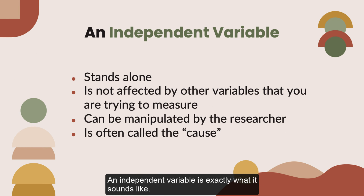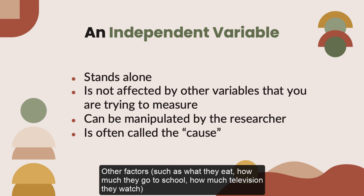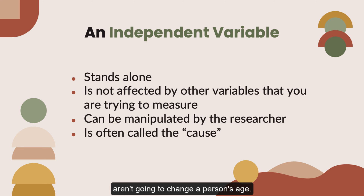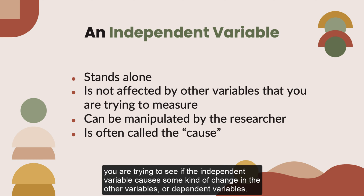An independent variable is exactly what it sounds like — it's a variable that stands alone and isn't changed by the other variables you are trying to measure. For example, someone's age might be an independent variable. Other factors, such as what they eat, how much they go to school, how much television they watch, etc., aren't going to change a person's age. When you are looking at some kind of relationship between variables, you're trying to see if the independent variable causes some kind of change in the other variables.